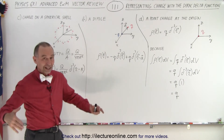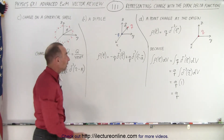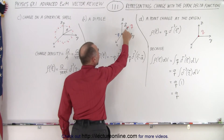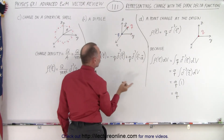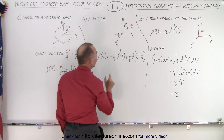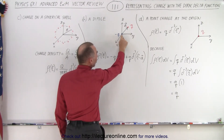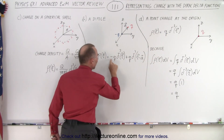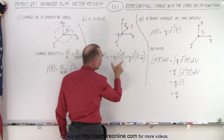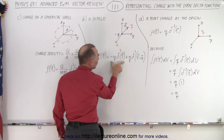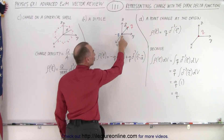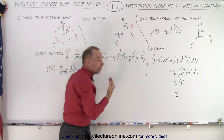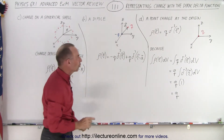But what if we have two charges, like a dipole? We have a negative charge at the origin and a positive charge at a distance A away from the origin — A can be in any direction. We can represent the charge at the origin in the exact same way, except in this case we have negative Q instead of positive Q, and this represents one of the two charges of the dipole at the origin.